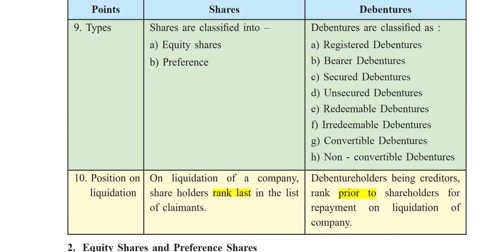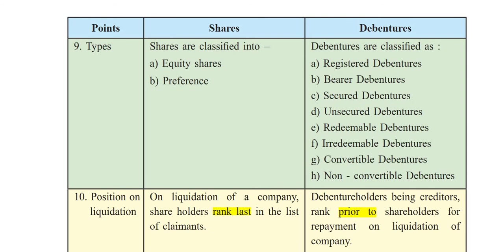The tenth point is position on liquidation — what happens when the company is closed. On liquidation of a company, shareholders rank last in the list of claimants. They are residual claimants and can only claim in the end. Debenture holders, on the other hand, being creditors, rank prior to shareholders. They are given priority in the repayment of capital. So debenture holders will be given a higher priority rank than shareholders on the liquidation of the company.